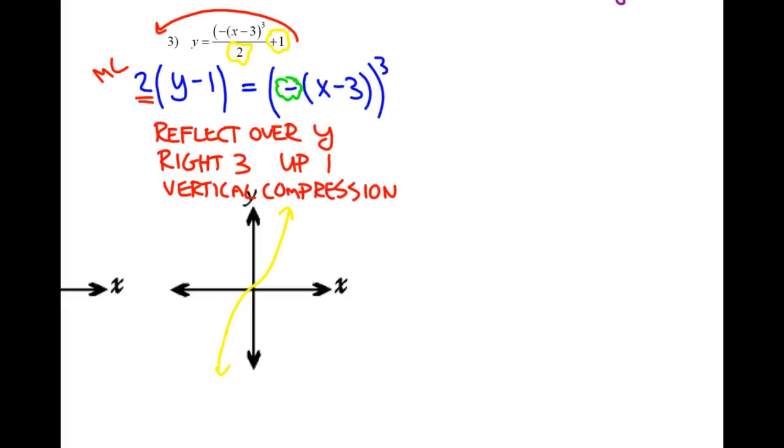This one's going to get reflected over the y-axis. So, what that means is it's going to be like a backwards one. So it's going to be like a backwards one, like that. But where does it need to move? It needs to move right three. So, we're going to go, let's see if I can just, one, two, three, up one. There it is right there.